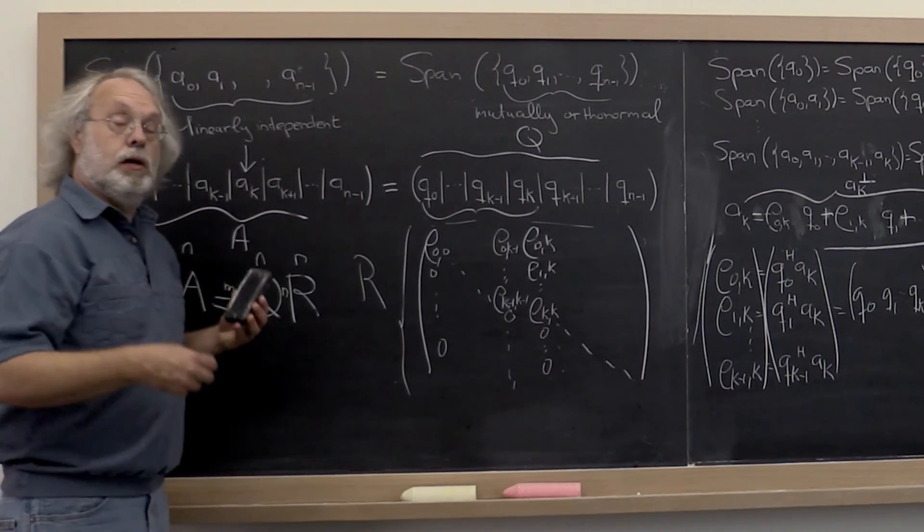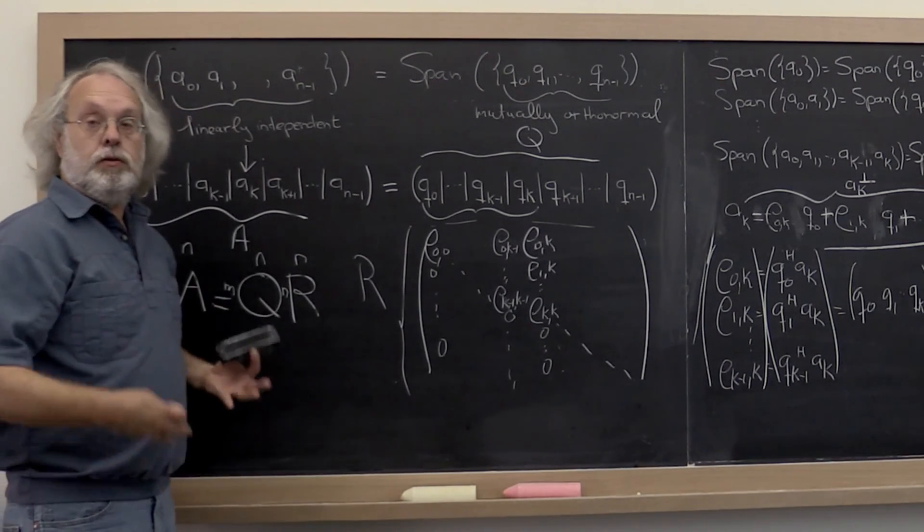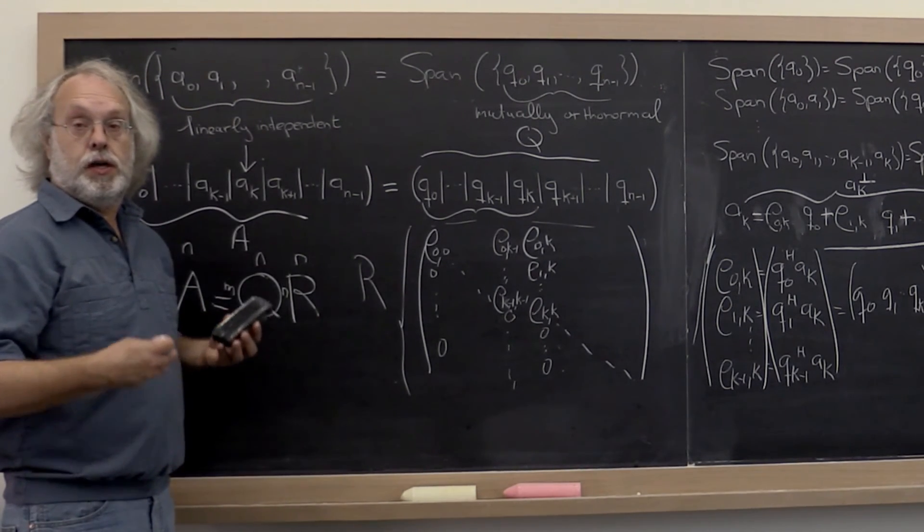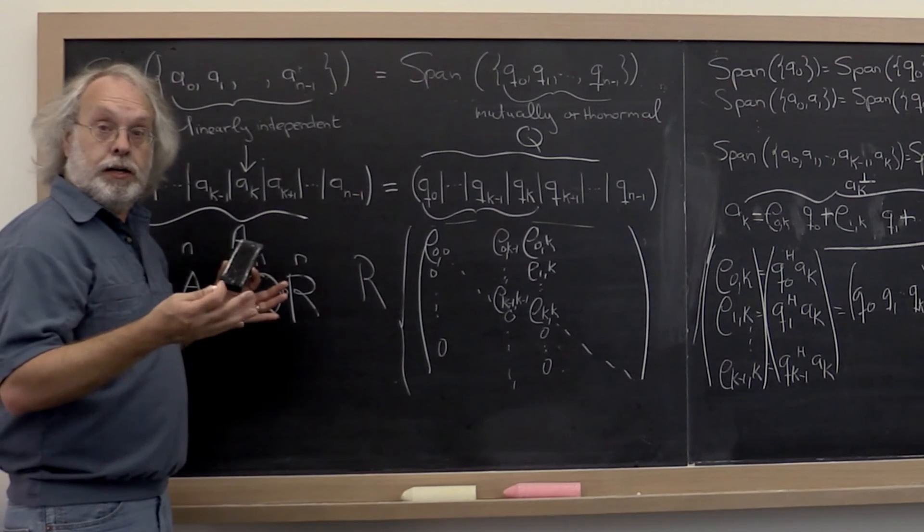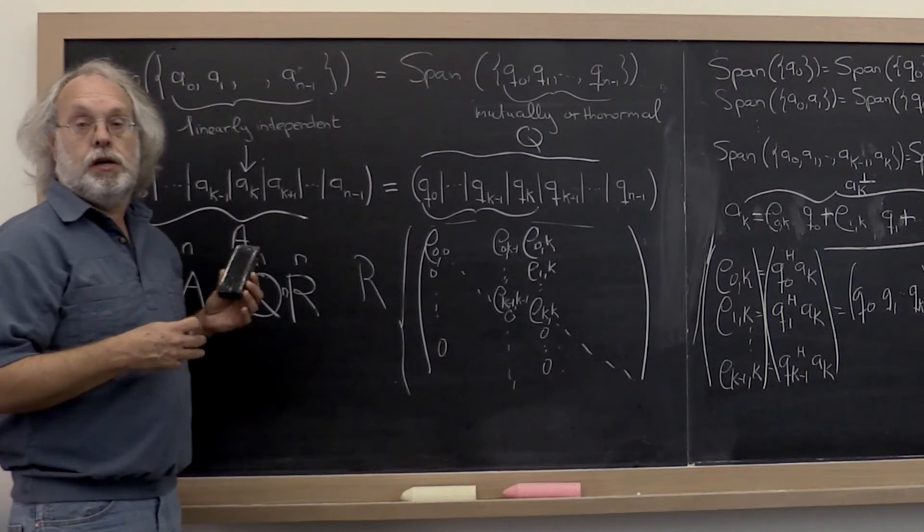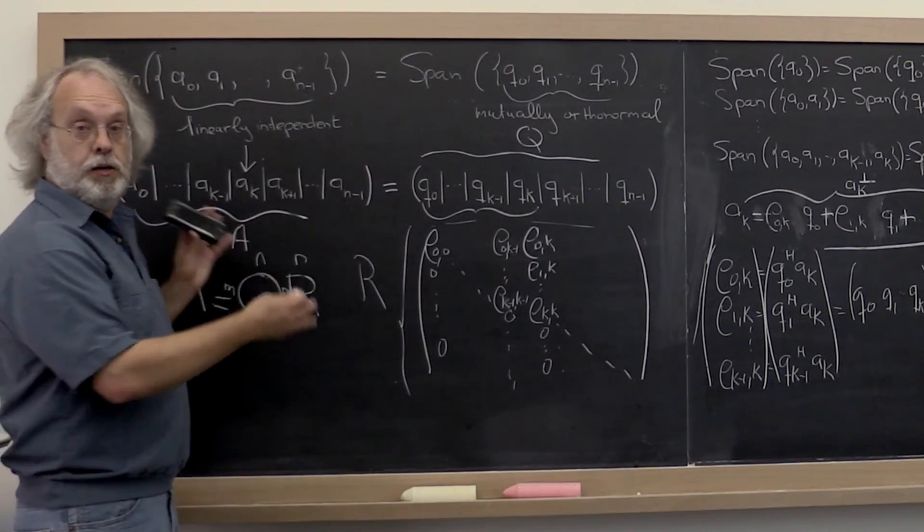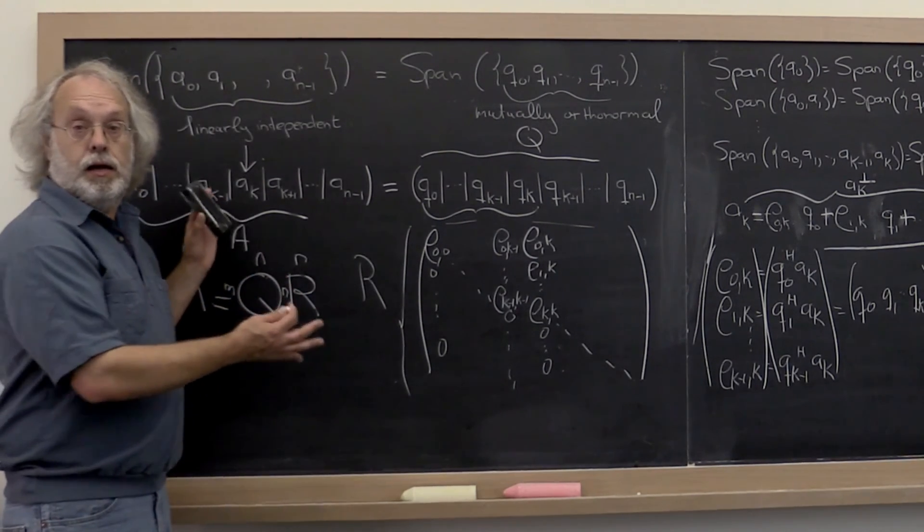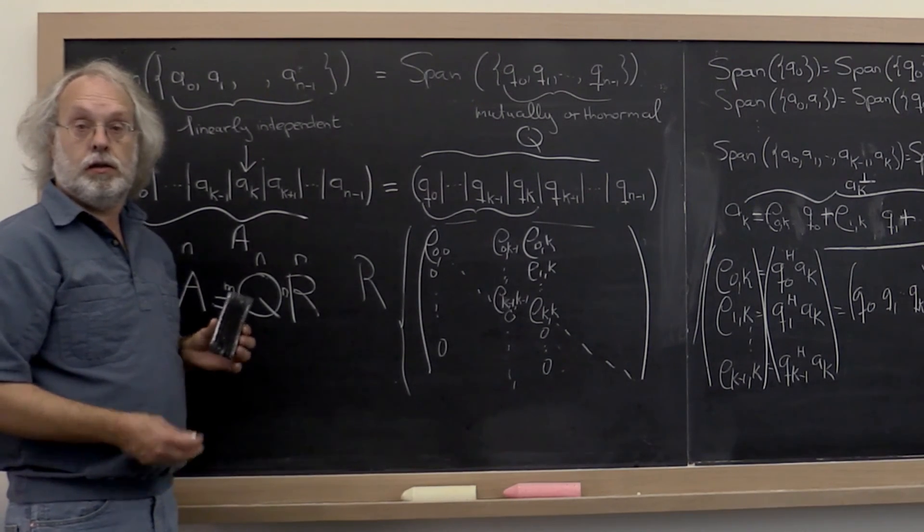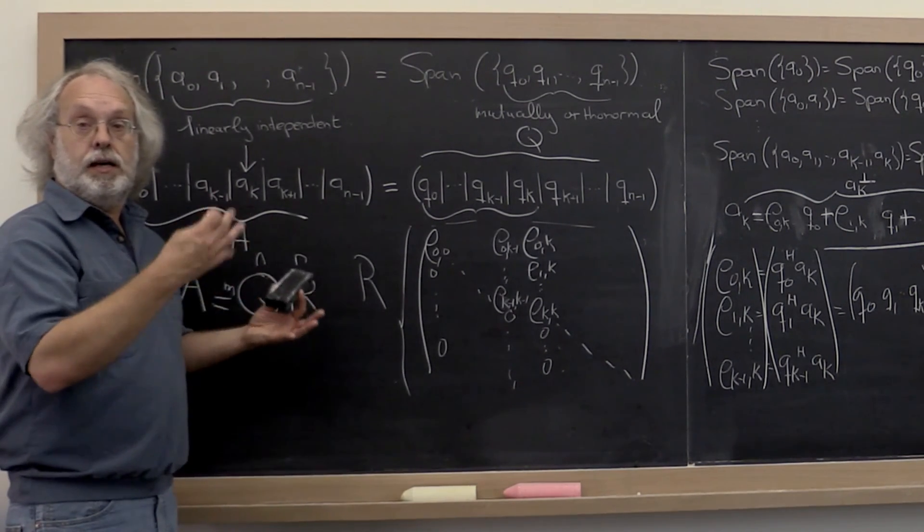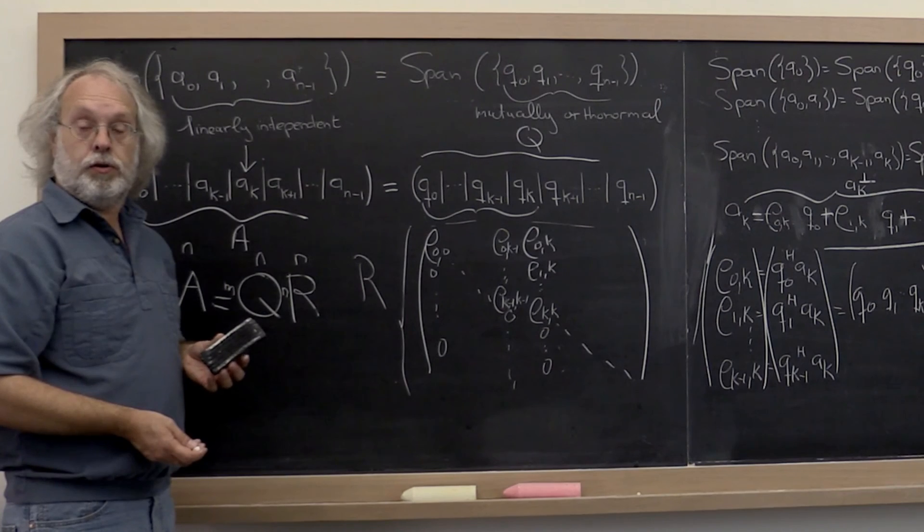So often when people talk about orthogonalization of vectors, they will say that they want to compute the QR factorization of matrix A. And this captures the relationship between that and the Gram-Schmidt orthogonalization method.